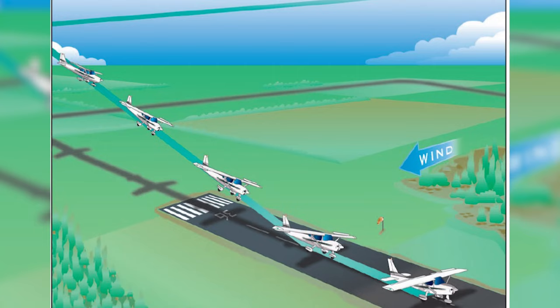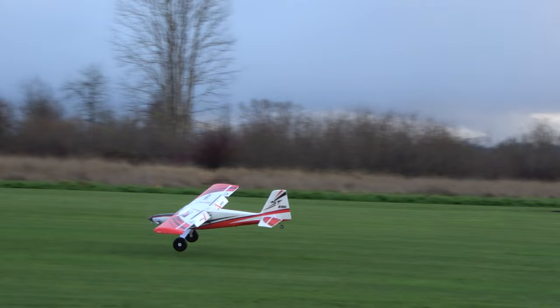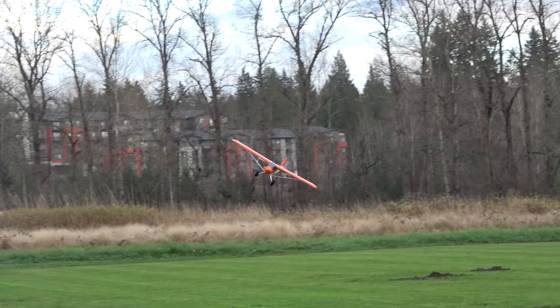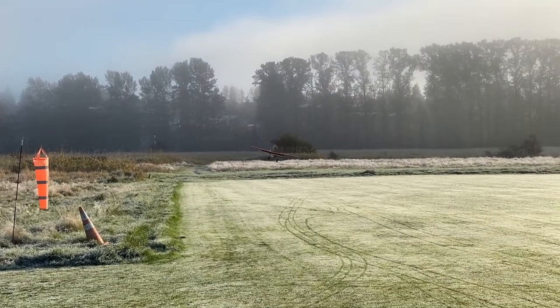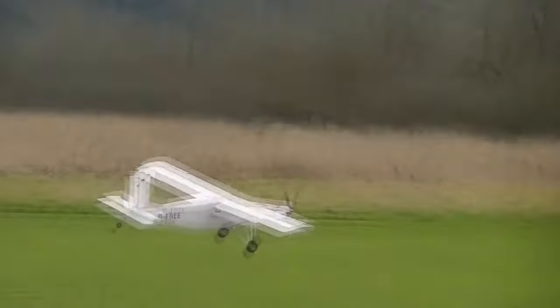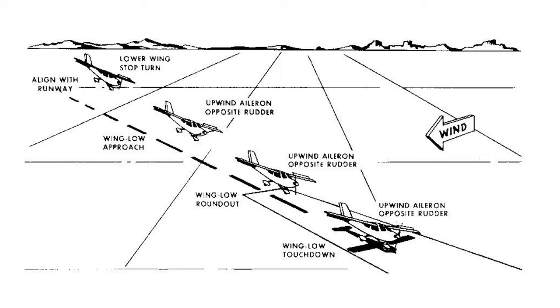Now that you know what a crab is, let's tie that back into a side slip. A side slip is still a cross-controlled condition but used differently than a forward slip. Generally, a pilot will fly the plane into ground effect — a wingspan distance or less above the ground — in a crab condition with the nose pointed into the crosswind. Then, as they begin to round out before the flare, they gently apply rudder opposite the wind direction to align the plane with the runway, while simultaneously rolling ailerons into the wind to prevent drifting. They maintain cross-control and adjust until they touch down on the upwind wheel.